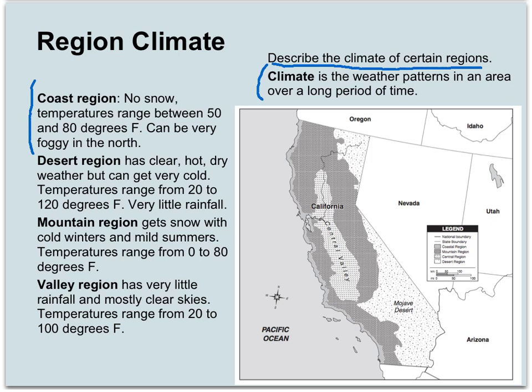How about the coast region? What's the climate like there? We don't really see snow along the coast. Temperatures range between 50 and 80 degrees. Up in northern California along the coast it's a little bit cooler, while the southern part is a bit warmer — it can get up into the 80s. The temperature does not vary much in coastal regions. Up in the northern part of the state it can get very foggy where you basically can't even see.